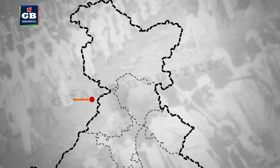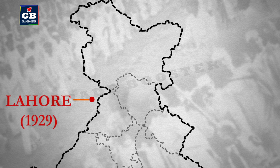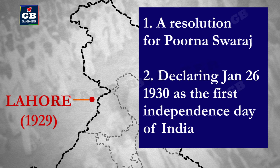Now let us move to the 1929 session at Lahore. Lahore is in the northwest part of India but is now in Pakistan, so we mark it outside the border, near Amritsar. During this Lahore session, two important things happened: a resolution was passed about Purna Swaraj, and the second was the boycott of the Round Table Conference held at London and declaring 26th January 1930 as the first Independence Day of India.